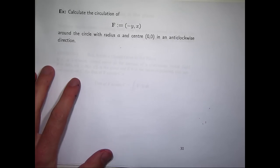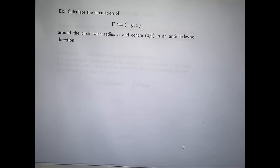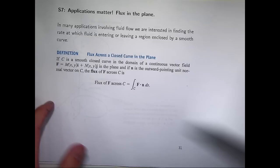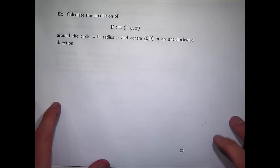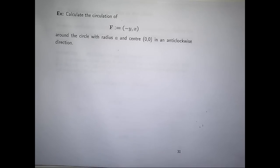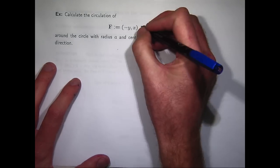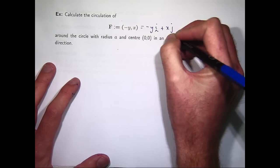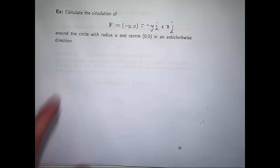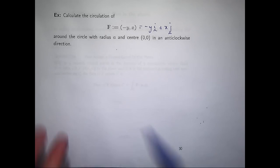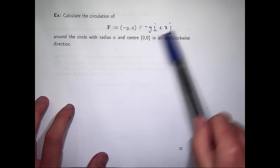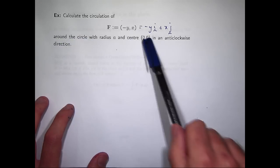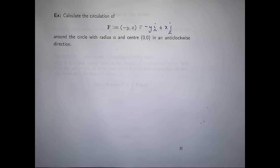Let's do an example. You can write this in the IJK notation if you want to, but we're just working in the plane here, in the XY plane. Calculate the circulation of this vector field around the circle with radius A and center zero in an anticlockwise direction.